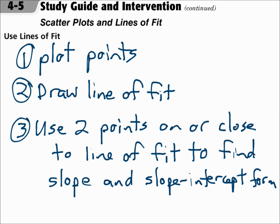Using lines of fit: to draw a line of fit and get the equation for the line, start by plotting the points, then draw the line of fit, and finally use two points that are on or close to the line of fit to find the slope, which will give you slope-intercept form. Write these steps out and follow them every time you're doing a scatter plot to find a line of fit.